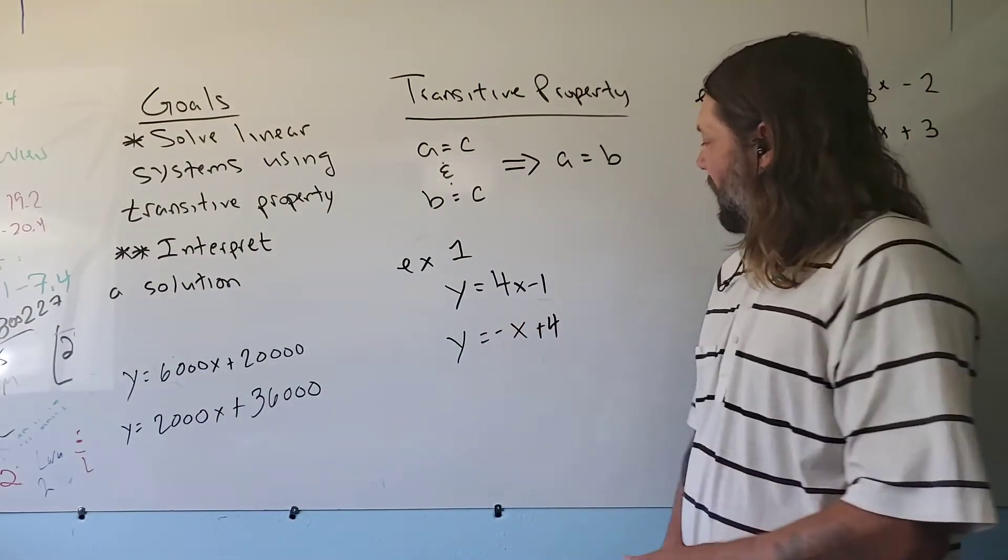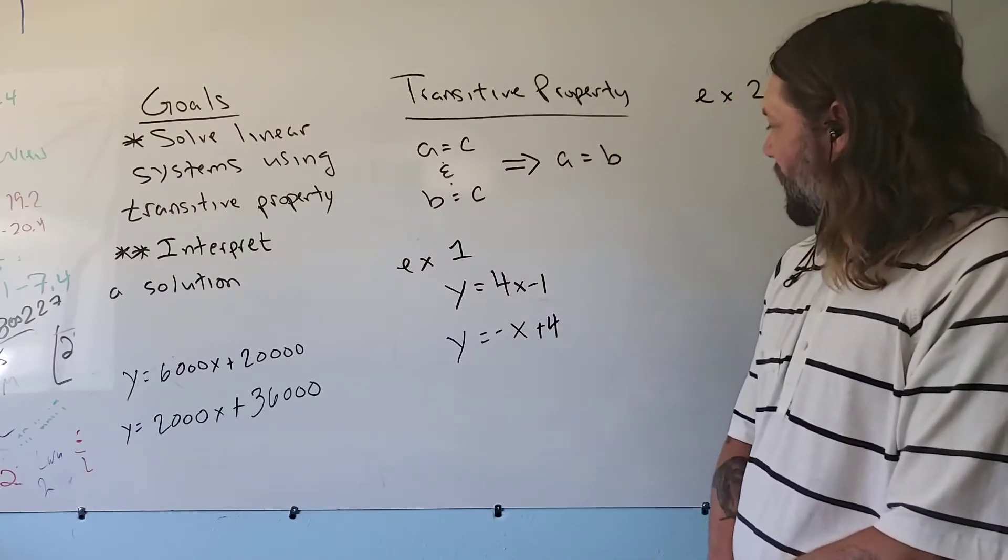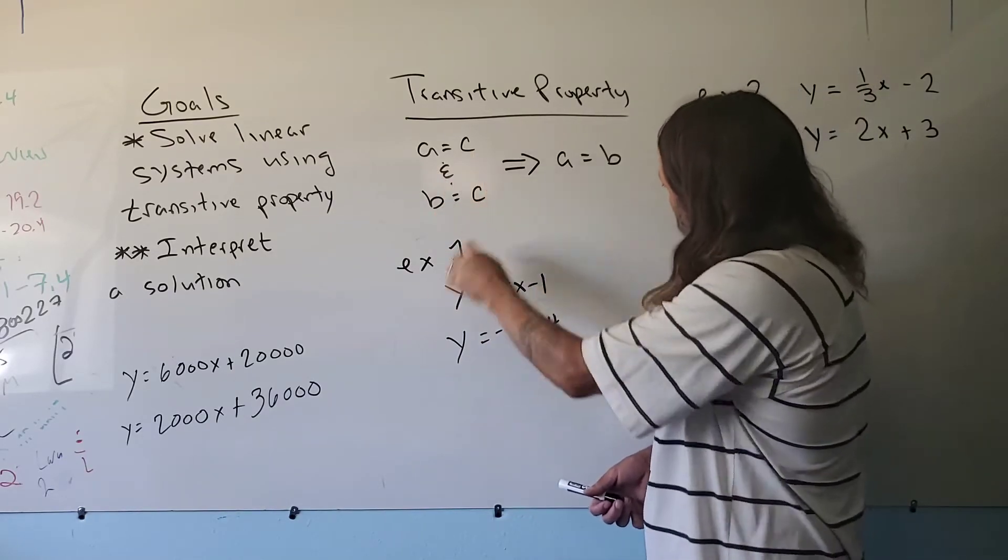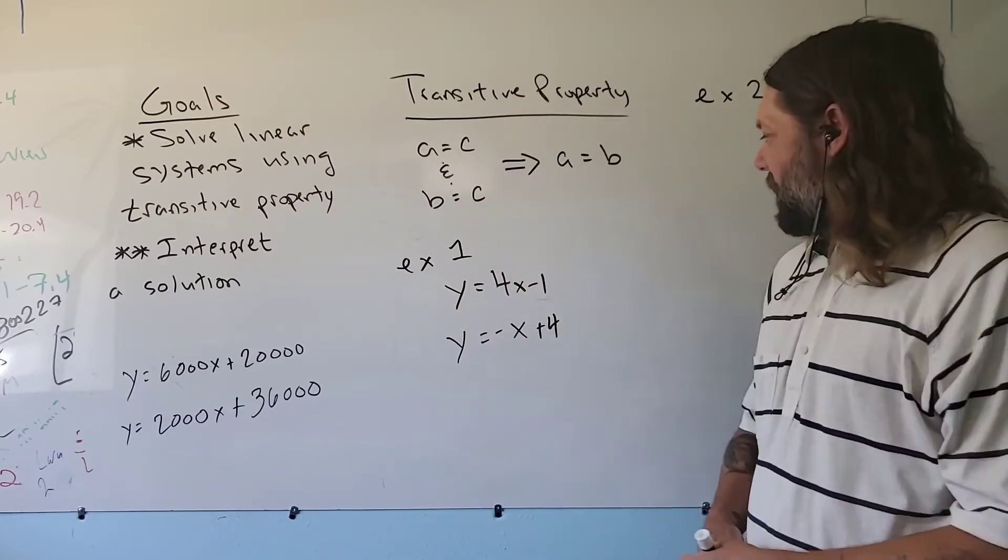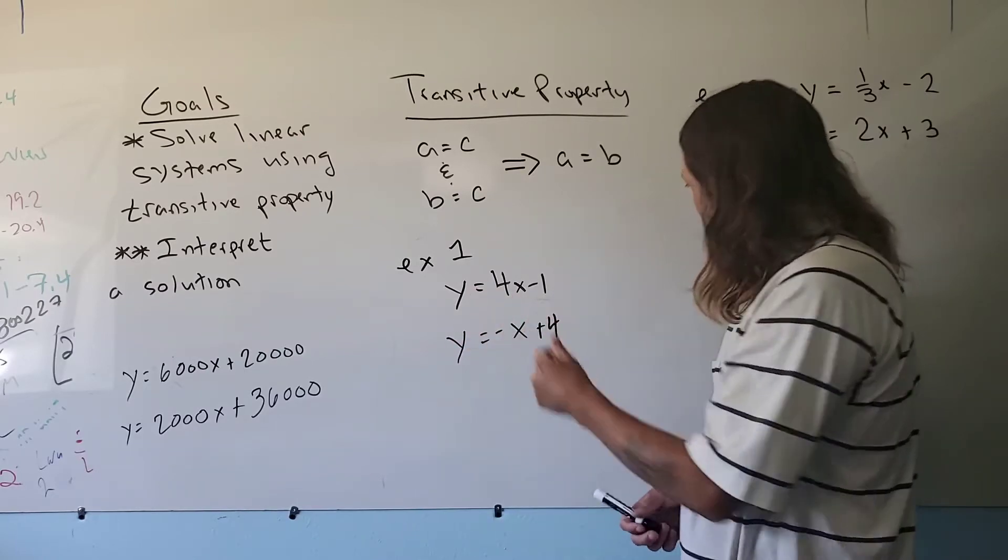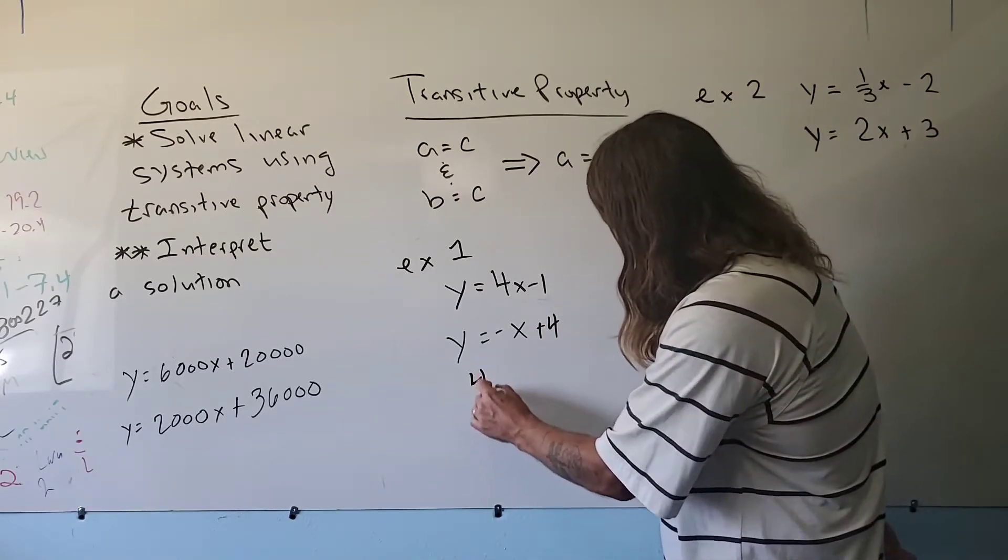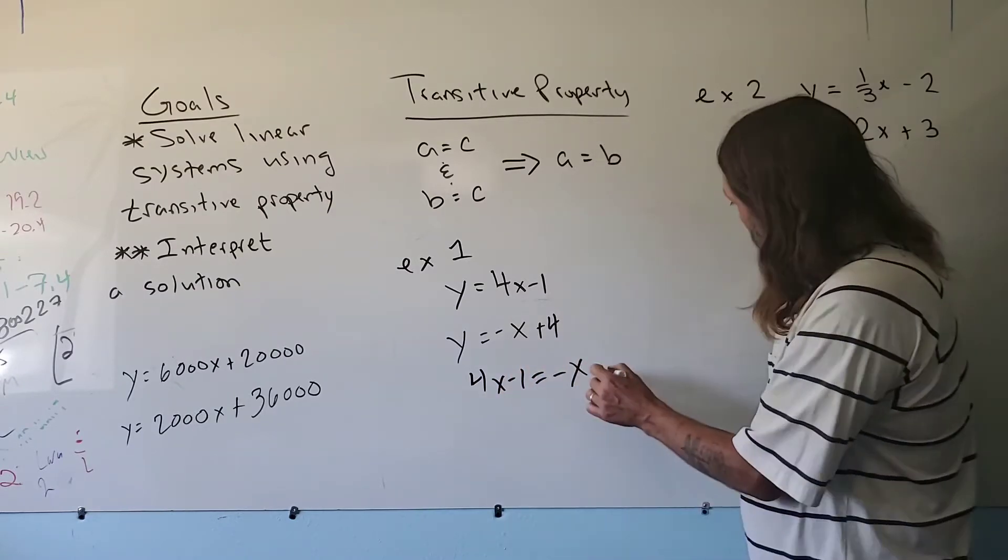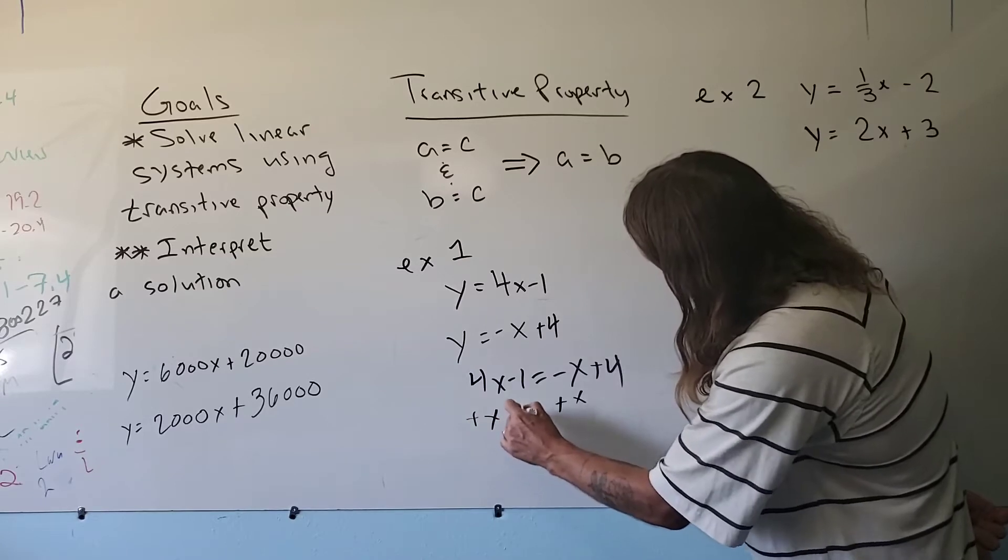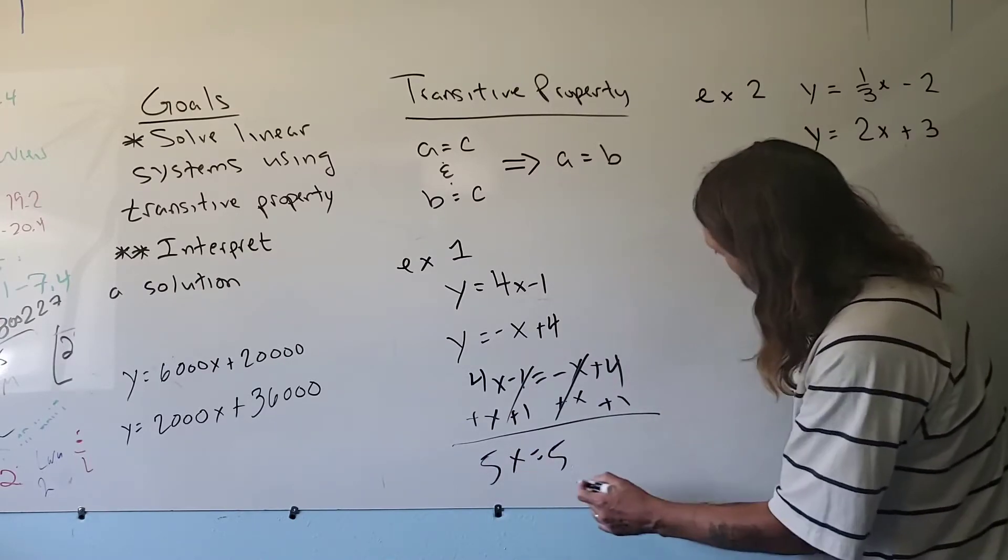In this first example, this is set up for the transitive property. The same thing is on the left side instead of being on the right side. So 4x minus 1 is equal to y, as well as minus x plus 4. Since both of these are equal to the same thing, we can then very quickly say that they must be equal to themselves. So this becomes 4x minus 1 equals minus x plus 4. Let's get all the x's to one side, move all the numbers together. I'll add an x to both sides. I will add a 1 to move that over. Now I have 5x equals 5, which means x is equal to 1.